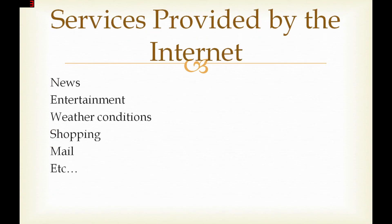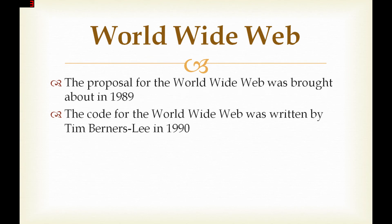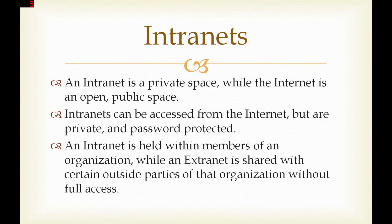Services provided by the internet include news, entertainment, weather conditions, shopping, mail, and the list goes on. The World Wide Web is a system of interlinked hypertext documents accessed via the internet. The proposal for the World Wide Web was brought about in 1989, and the code was written by Tim Berners-Lee in 1990. An intranet is a private space, while the internet is an open public space. Intranets can be accessed from the internet but are private and password protected, held within members of an organization. An extranet is shared with certain outside parties of that organization without full access.